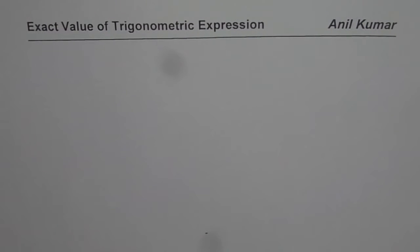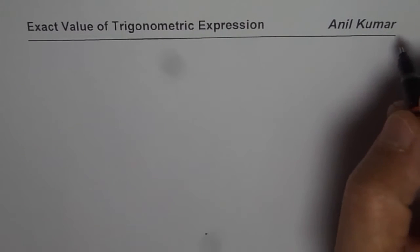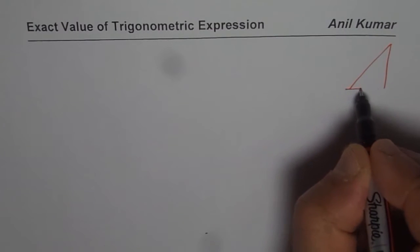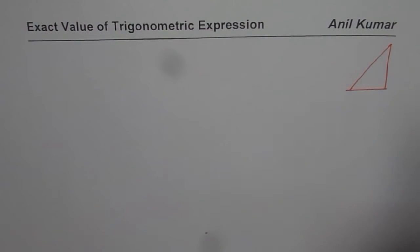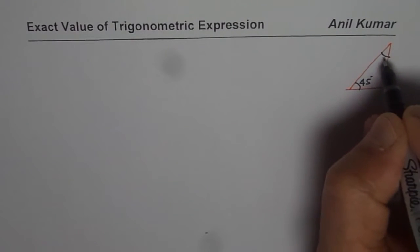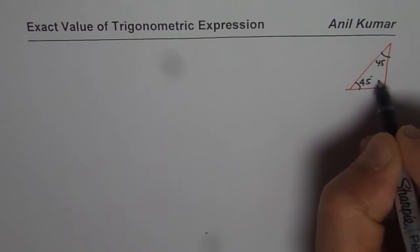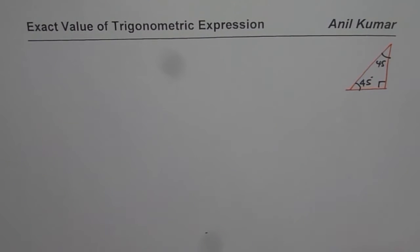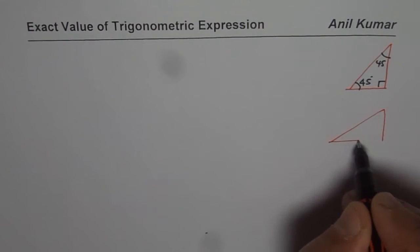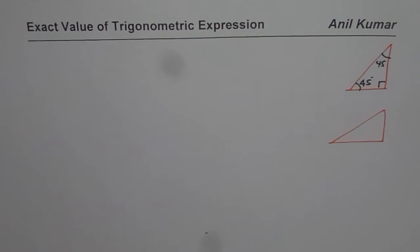I'm Anil Kumar and in this video we are going to understand how to find or calculate the exact value of trigonometric expressions. To do this, you should be equipped with two special triangles: the 45-45-90 triangle and the 30-60-90 triangle.